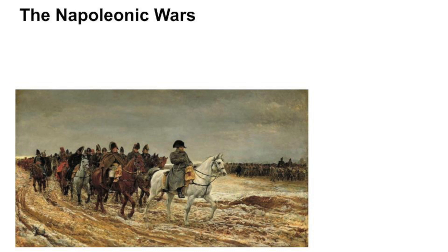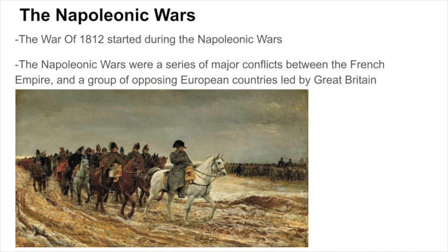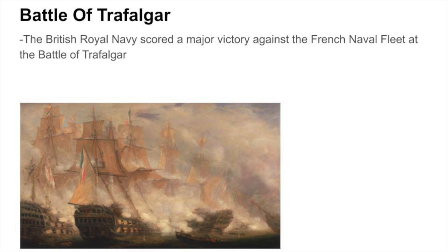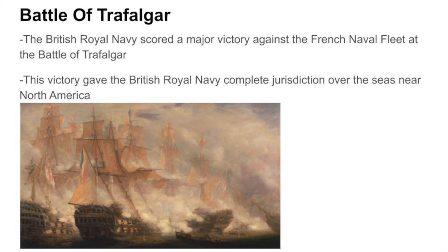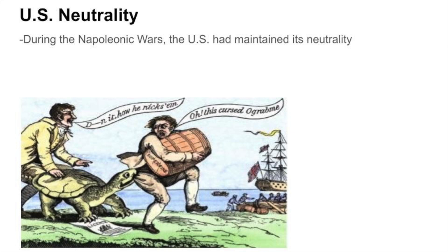The War of 1812 started during the Napoleonic Wars. The Napoleonic Wars were a series of major conflicts between the French Empire and a group of opposing European countries led by Great Britain. During the Napoleonic Wars, the British Royal Navy led by Lord Nelson scored a major victory against the French naval fleet at the Battle of Trafalgar in 1805. This victory gave the British Royal Navy complete jurisdiction and control over the seas near North America. During the Napoleonic Wars, the U.S. had maintained its neutrality despite pressure from both the French and the British to support their respective navies.